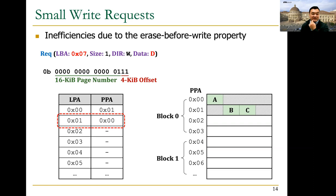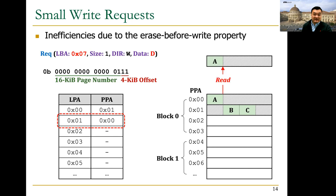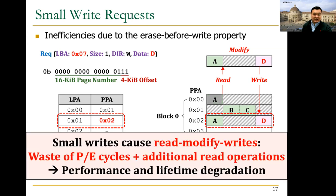Let's see how the FTL handles the write request to logical block 7. Since the mapping table stores only a single physical page address per logical page address, the FTL must store data blocks A and D in the same physical page. To do this, the FTL first reads the previously written page from the NAND flash chip into internal memory, modifies the buffered page with the new data D, and then programs a new page (page 2 in this example). This is called a read-modify-write operation, which causes not only waste of program and erase cycles but also an additional read operation, significantly degrading SSD performance and lifetime.